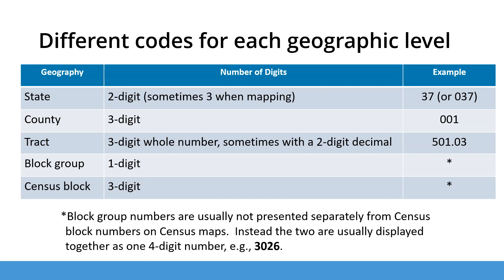Block group numbers are usually not presented separately from census block numbers on census maps. Instead, the two are usually displayed together as one four-digit number, such as 3026, where three is the block group number and 026 is the census block number.